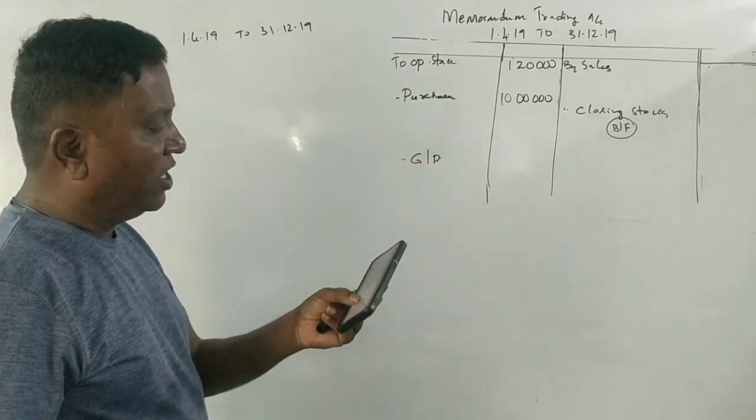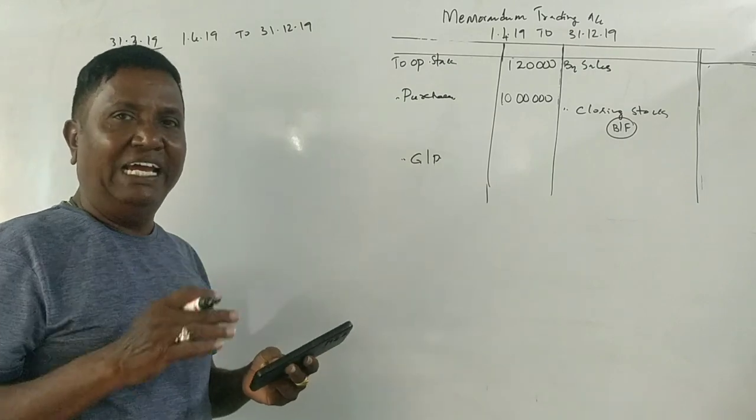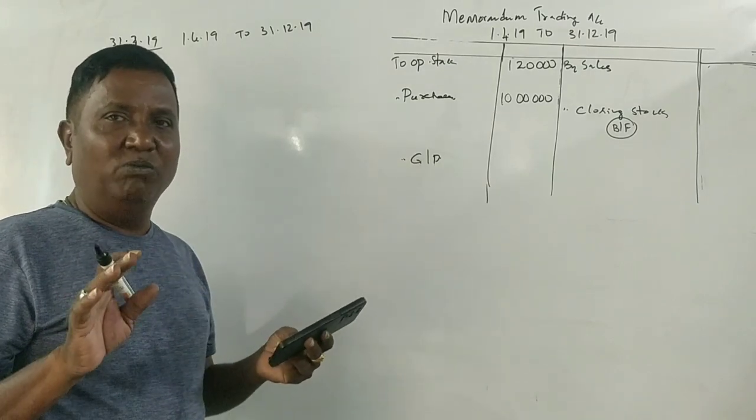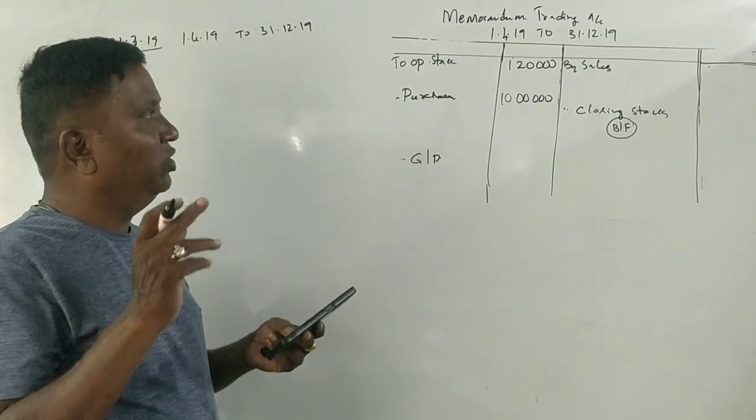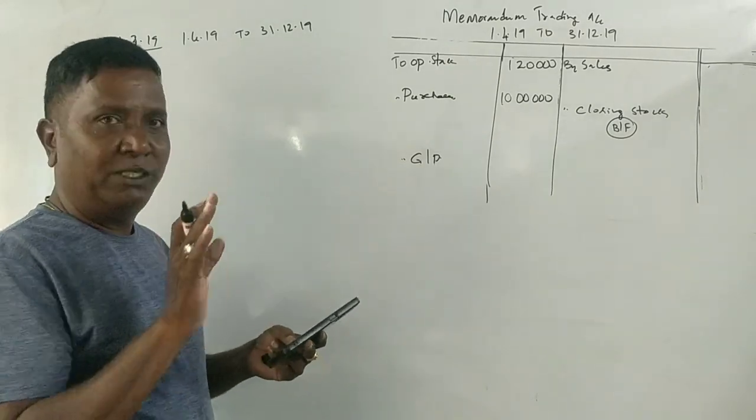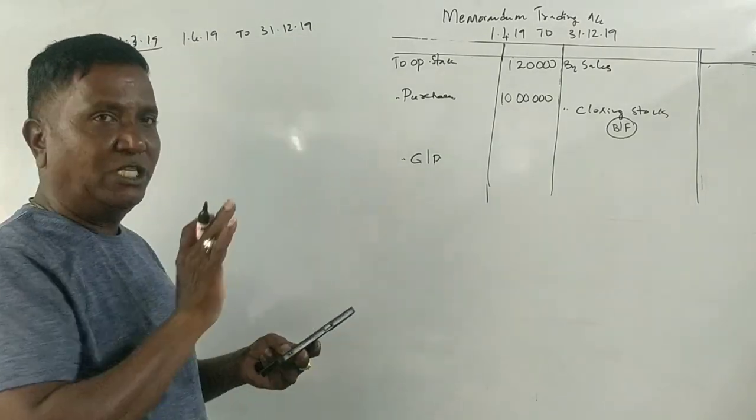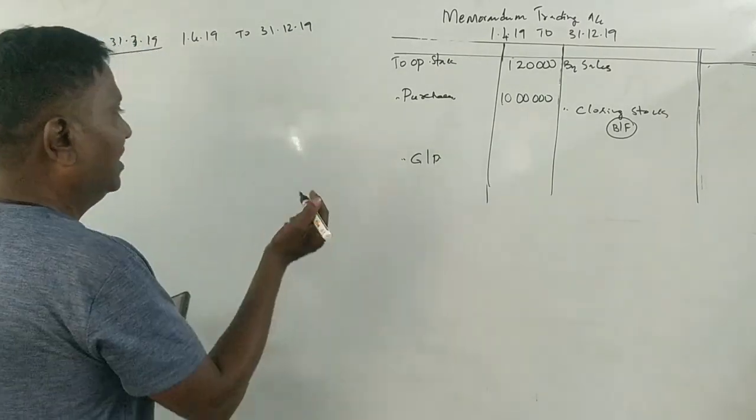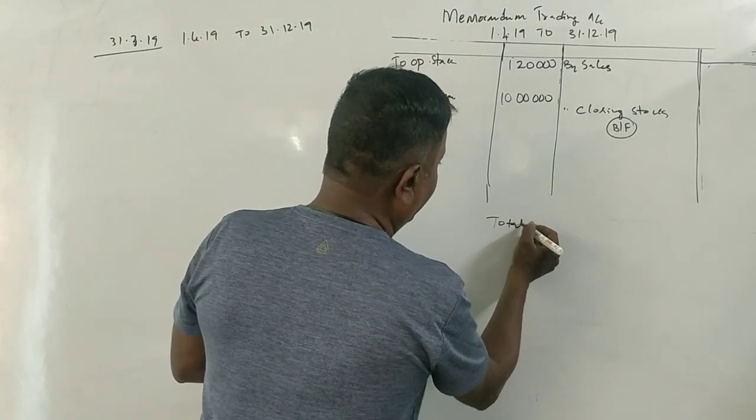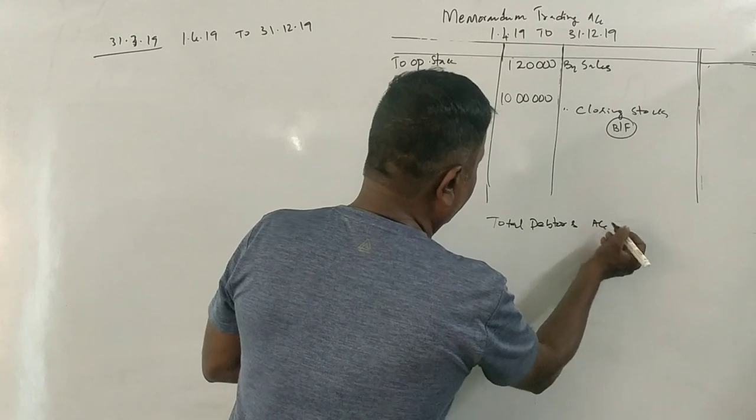The rate of gross profit on sales is 25%. Now, there are three entries to consider: one for sales, two for closing stock, this is a permanent entry. This is gross profit. Sales give gross profit. This is a permanent total debtor account.